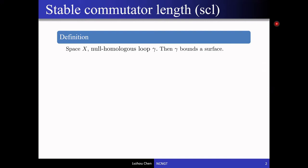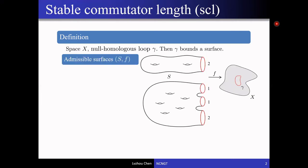Formally, the given data is a topological space X and a null-homologous loop gamma. Being null-homologous means that gamma bounds some singular surface, and these are exactly the surfaces that we take into consideration. Such surfaces are called admissible surfaces, and an admissible surface consists of two pieces of data.